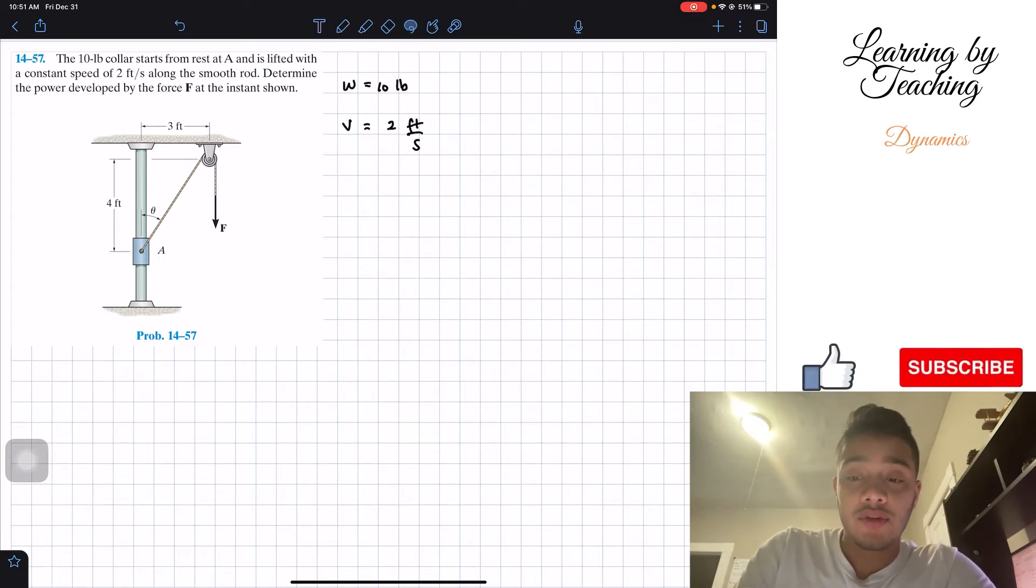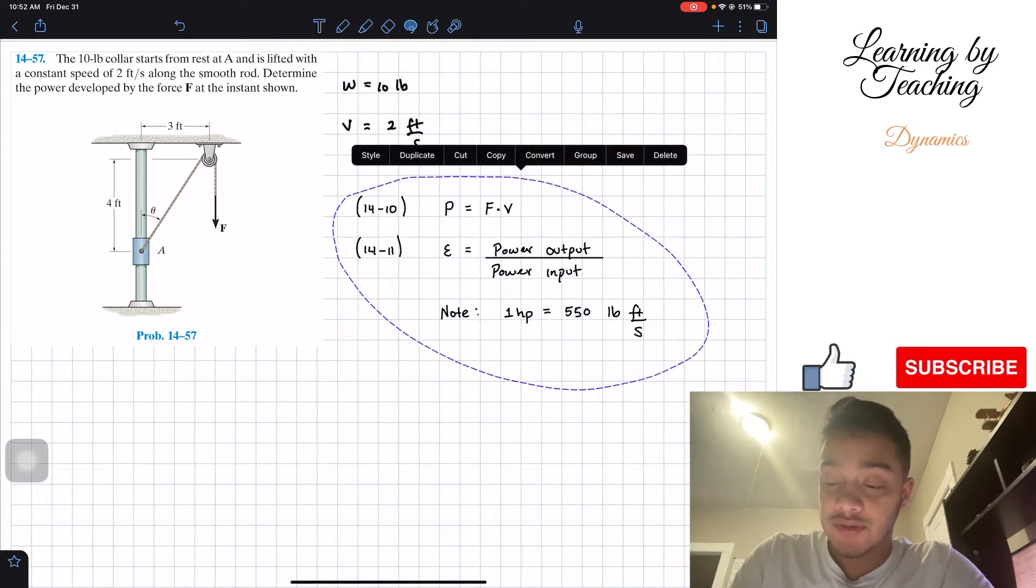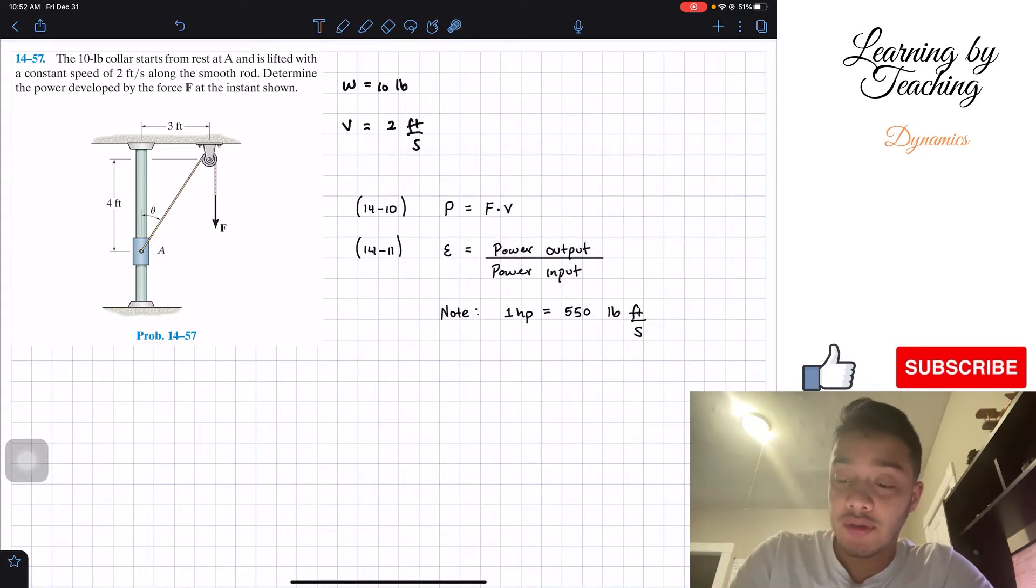So in order to find the power, we're going to utilize equations from the 14.4 chapter, which are the power and efficiency equations. And in order to find our power, we need the force and we need the velocity. We know the velocity already, so all we need to do is find this force.